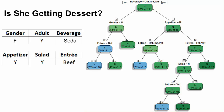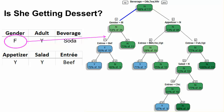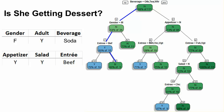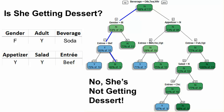Is she getting dessert? An adult female gets soda, an appetizer, a salad, and beef. Soda means we're false for other, tea, or water. Gender is female, so we're false for gender equals male. Beef is true for entree equals beef. The result is no — she's not getting dessert either.